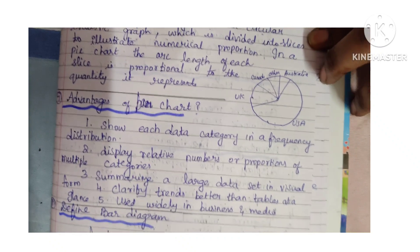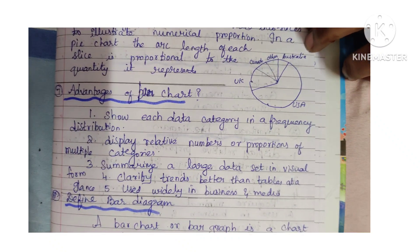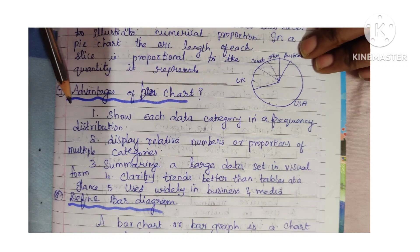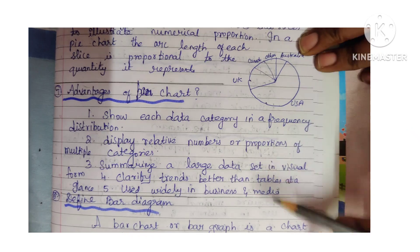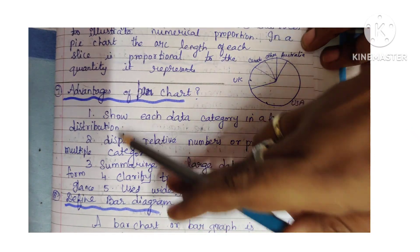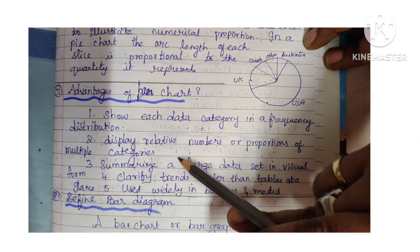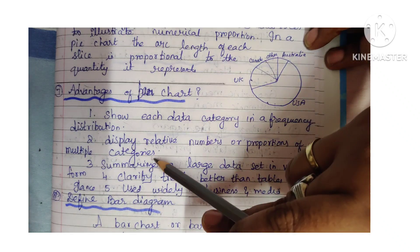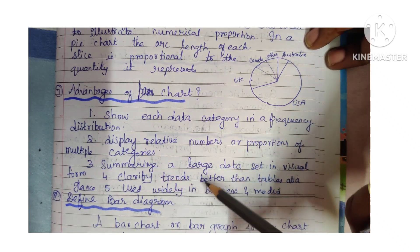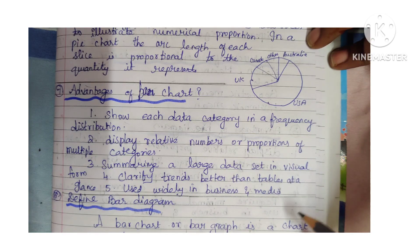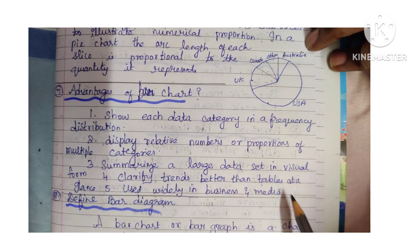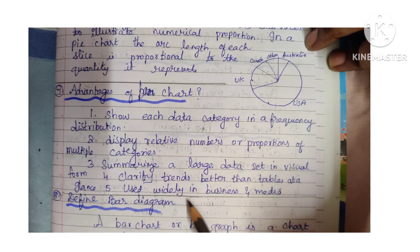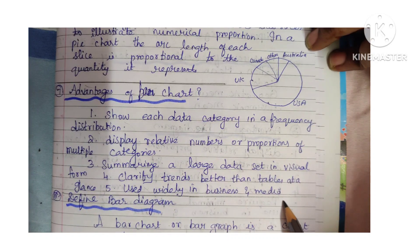Advantages of bar chart or bar diagram: it shows each data category in a frequency distribution; it displays relative number or proportions of multiple categories; it summarizes a large data set in visual form; it clarifies trends better than tables at a glance; it is used widely in business and media.